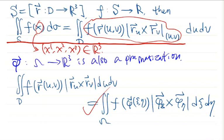The surface integral, the left-hand side, does not depend on the parametrization — no parametrization appears there. So it should not depend on parametrization. Therefore, if you change parametrization, you must make sure that the right-hand sides are equal. Otherwise, this definition is wrong — it's not reasonable. So we will prove this important result.